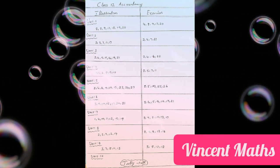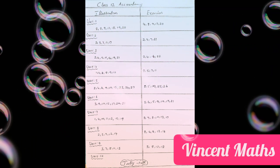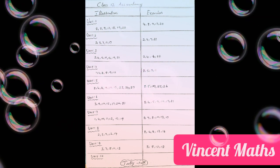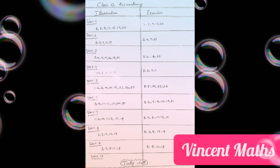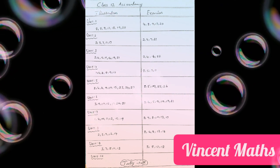The important sums are: 2nd, 4th, 5th, 9th, 10th, 17th, and 21st sum.